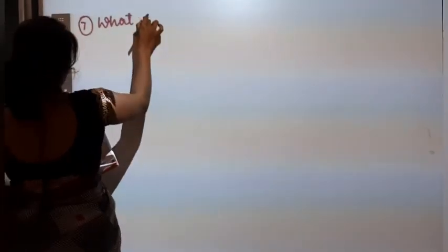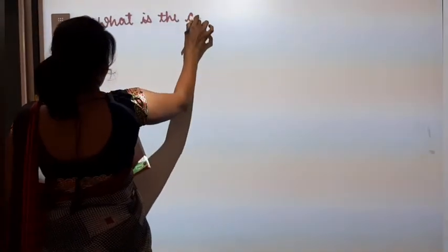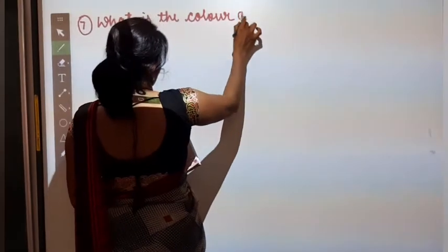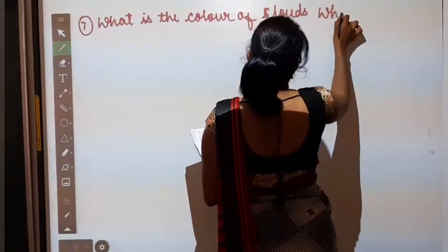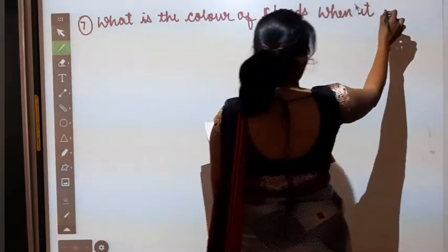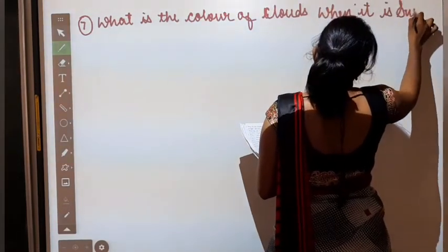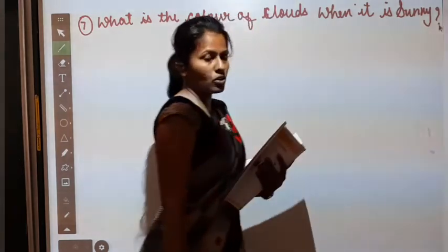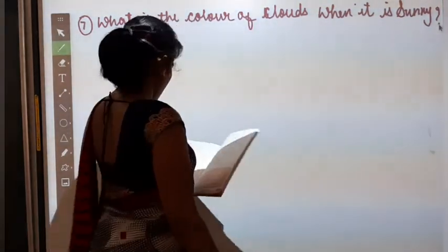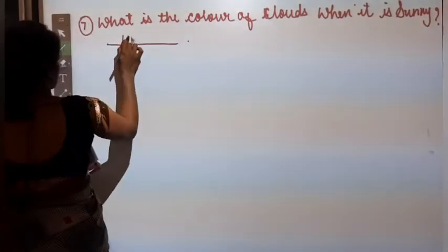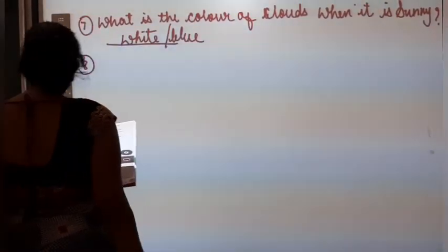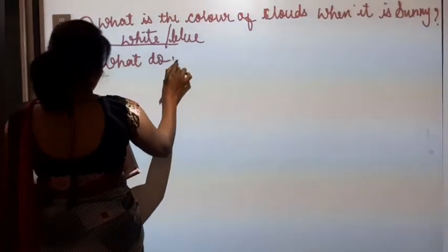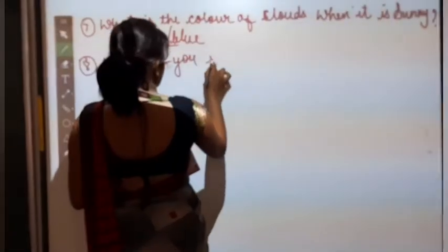Then number seven. What is the color of the sky? Color of the clouds when it is sunny. When it is sunny, to clouds ka color kaonsa hota hai? Black, white, blue or red. So white or it can be blue.